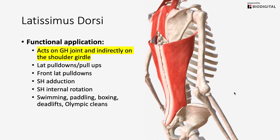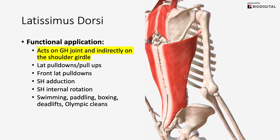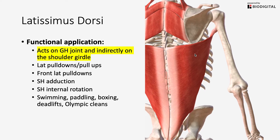Looking at the GH joint and the shoulder girdle, your lat does have some fascial connection to the inferior border of your scapula, so there is going to be some communication and some influence on scapular stability. But primarily your lats are going to act on the humerus, or your arm.